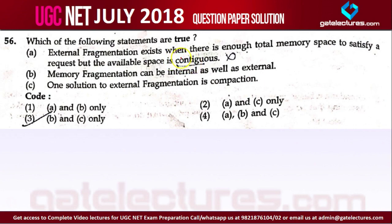The definition of external fragmentation is that whenever any process wants some space from the main memory, space is available in the main memory but it is not contiguous.